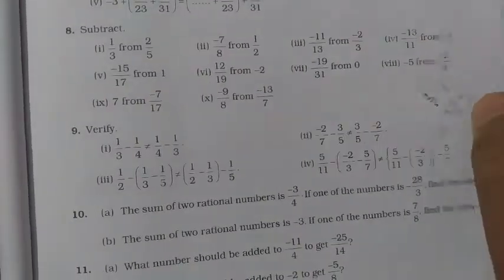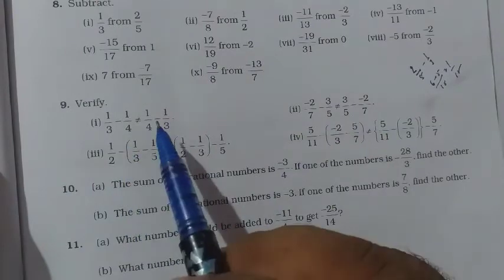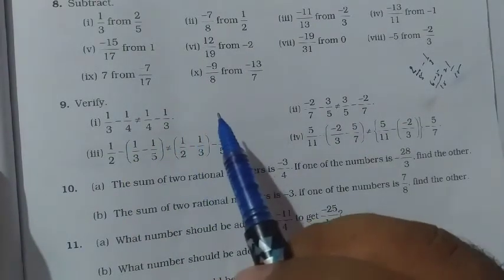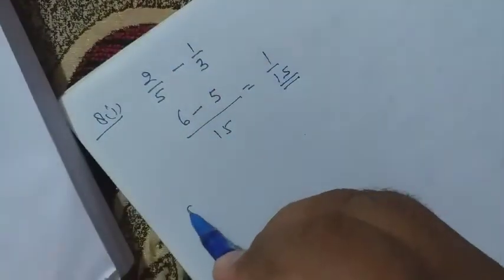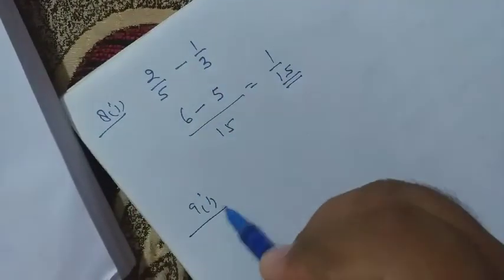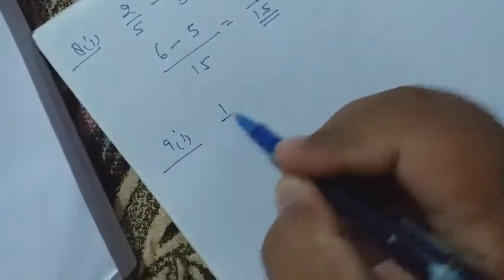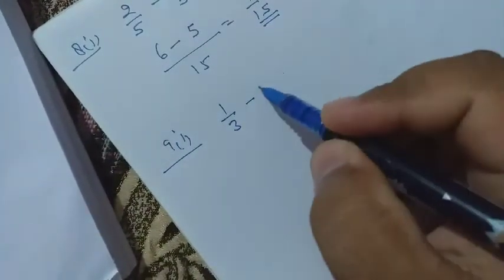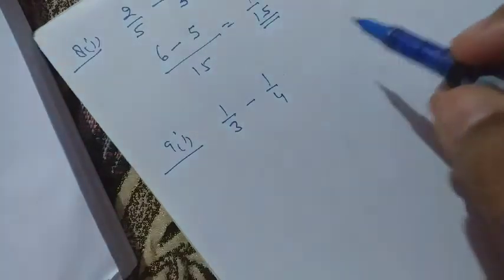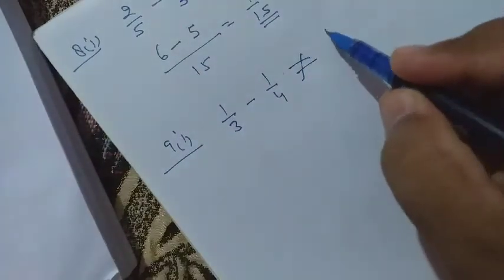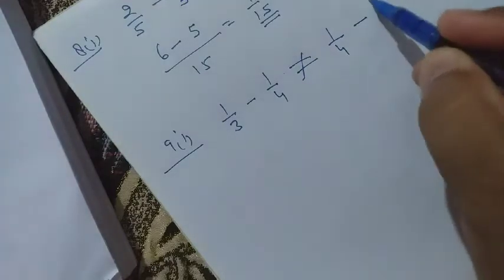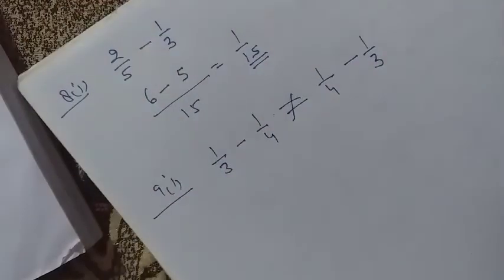Now it is question number 9, verify 1 upon 3 minus 1 upon 4 not equal to 1 upon 4 minus 1 upon 3. Let's solve question number 9 first part. Here 1 upon 3 minus 1 upon 4 not equal to 1 upon 4 minus 1 upon 3, let's verify it.